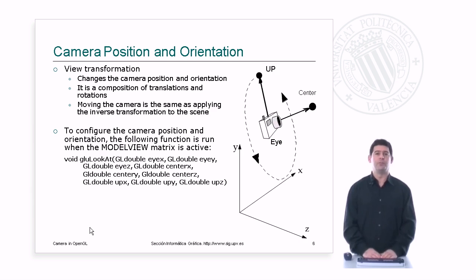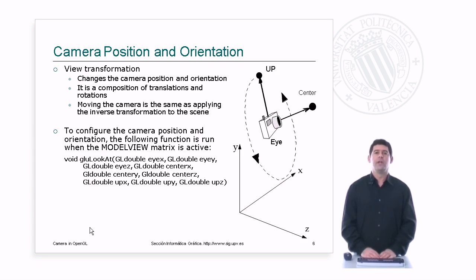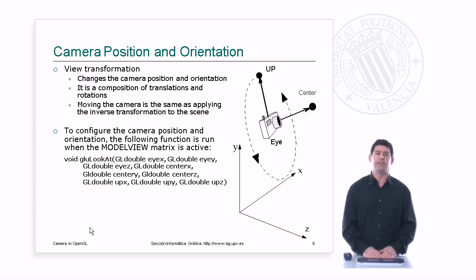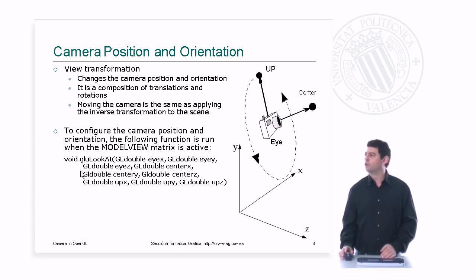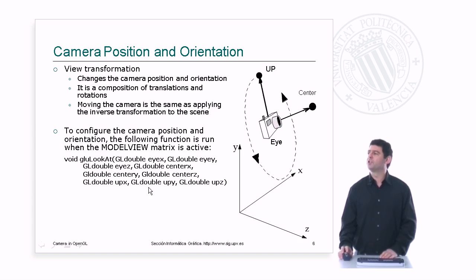Now that we know how to handle transformations in OpenGL, let's see how to set up the camera position and orientation. This is done using the view transformation, composed of translations and rotations. We can move the camera or apply the inverse transformation to the scene. We'll use a simpler approach: the gluLookAt function. Its prototype takes three parameters — the eye position, the center or lookat point, and the up vector representing the camera's vertical. This is much simpler than using raw transformations.